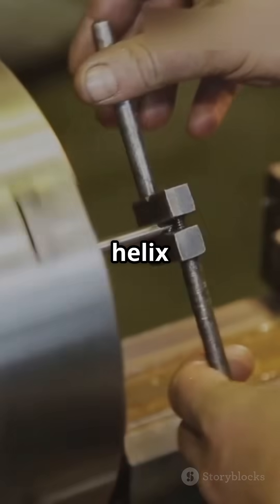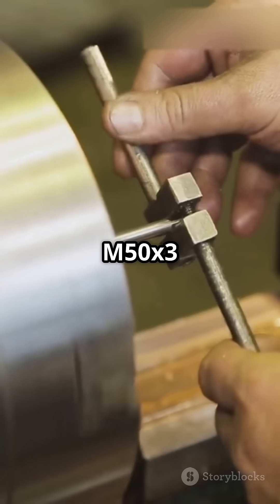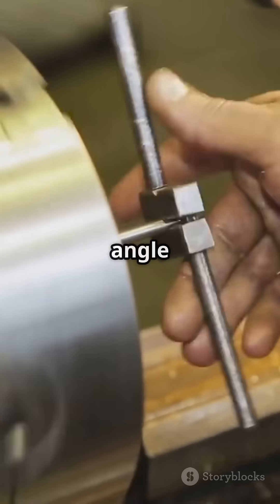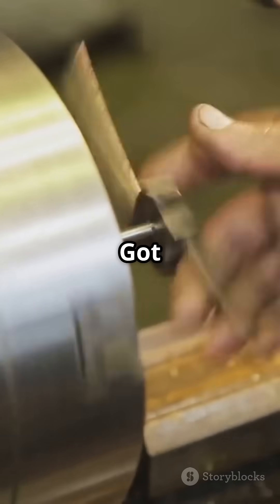There you go. The helix angle for an M50X3 2-start thread is about 2.19 degrees. Keep this angle in mind for smoother threading operations. Got it?